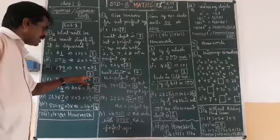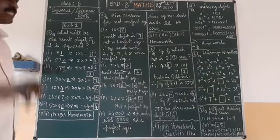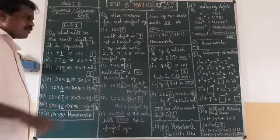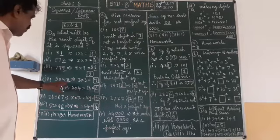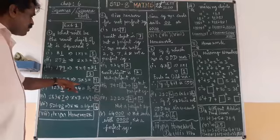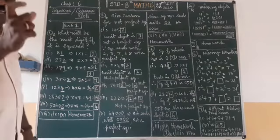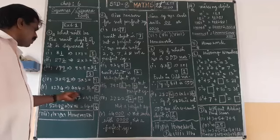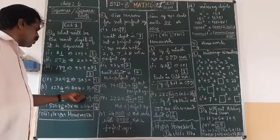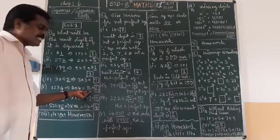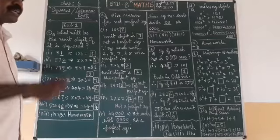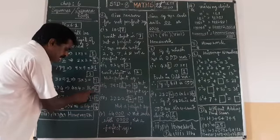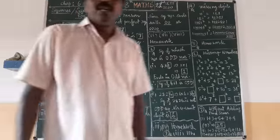For 3853: the last digit is 3. Multiply 3 into 3, which gives 9. So the unit digit in the answer is 9. For 1234: the unit digit is 4. Multiply 4 into 4, which gives 16. So the answer will end with 6. Take the unit digit of 16, which is 6.